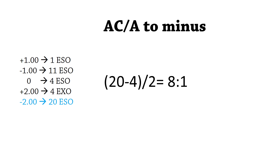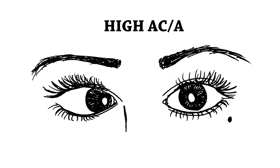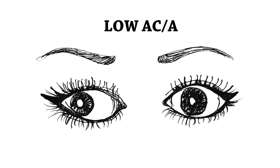Looking at the results, if we give this patient plus ones it's going to reduce their esophoria to one prism diopter, so the patient is going to benefit from plus one readers. If you have a high ACA ratio, you're doing a lot more convergence per diopter of accommodation — the eyes are turning in too much, so the patient has an eso. Whereas if you have a low ACA ratio, you're not doing enough convergence per diopter of accommodation — the eyes aren't turning in enough, so an exo.